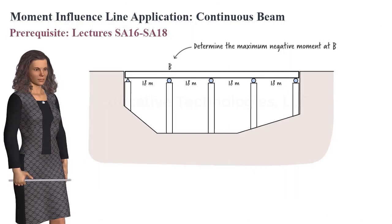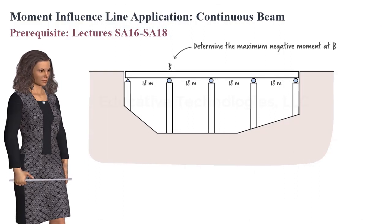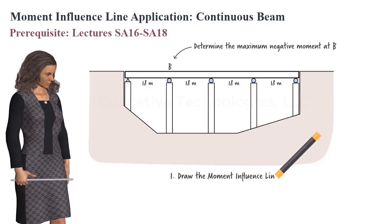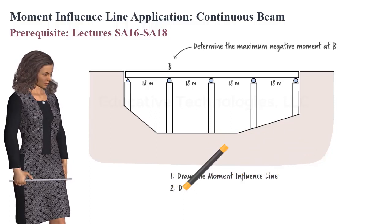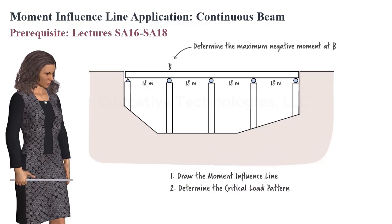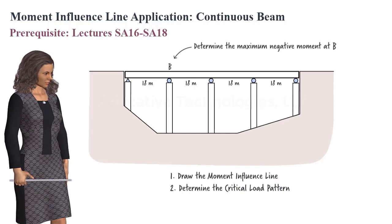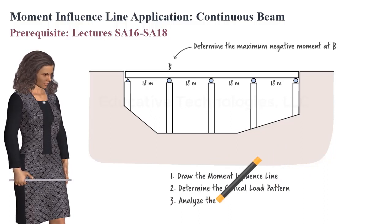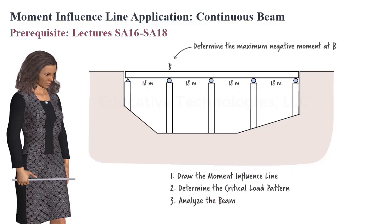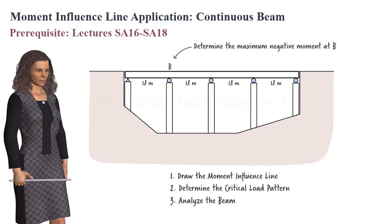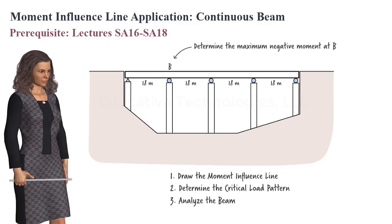We are going to solve this problem in three steps. First, we will draw the influence line for bending moment at support B. Second, we will use the drawn influence line to determine the load pattern that causes negative bending moment at B to reach its maximum value. Third, we will load the beam using the pattern obtained in step 2, and analyze the structure in order to determine the maximum negative moment at the support.